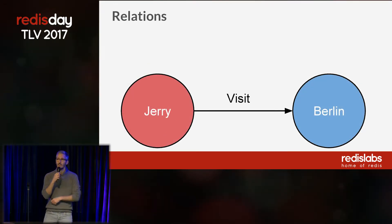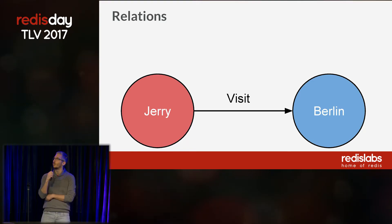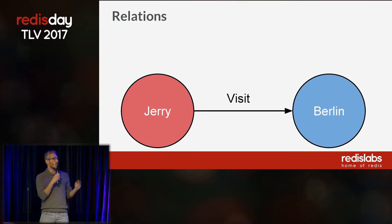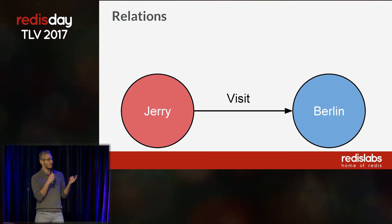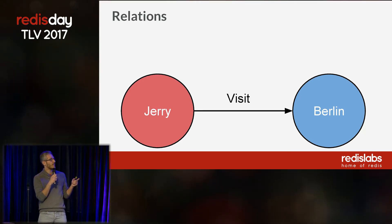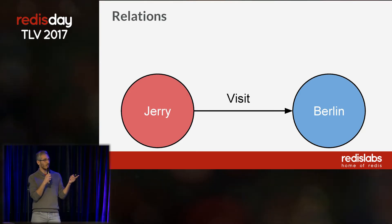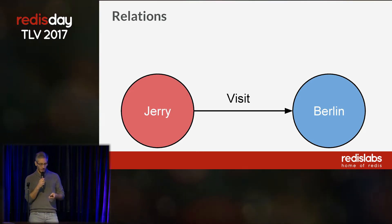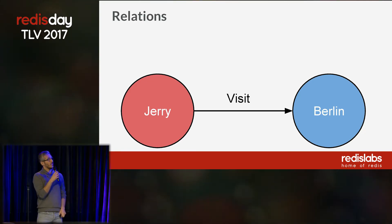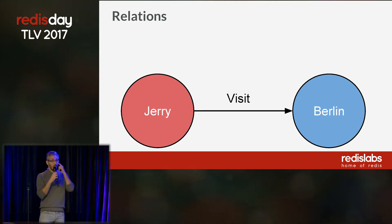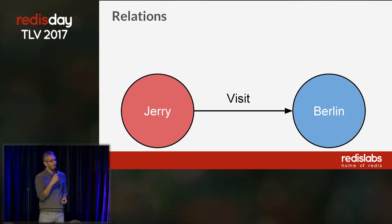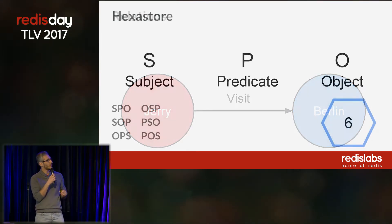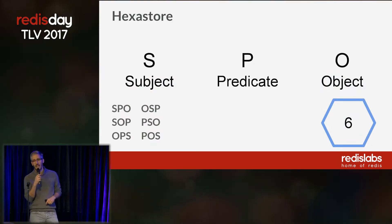Second, you might have other Redis users who might not even be aware that their data is used within a graph, so we want to keep it that way so we can get all the updates of the data basically free. Once we have nodes, we would like to connect them to describe different relationships. For instance, if Jerry visited Berlin, we can connect the node representing Jerry with the node representing Berlin with a 'visit' connection. One question that comes to mind is how are we going to store the graph within Redis?